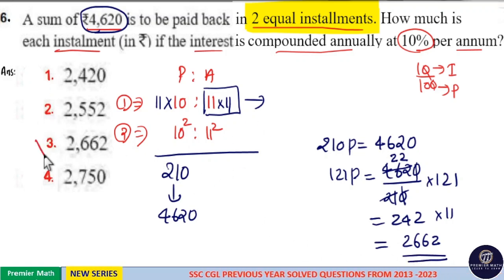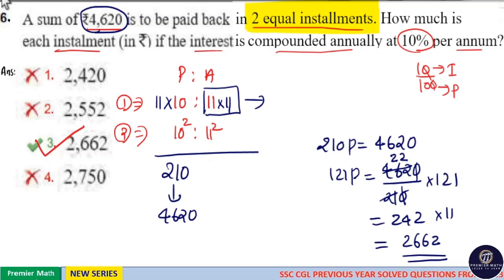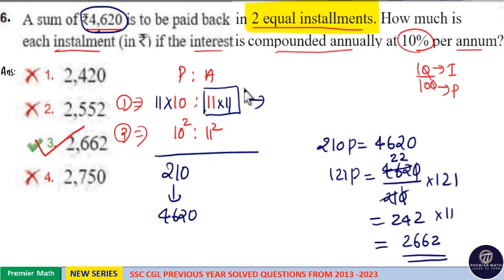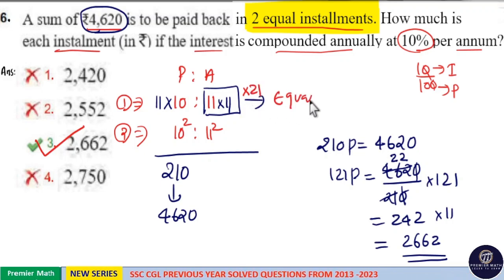Your answer is 2662. Option 3 is your answer. This is 11 squared means into 121. This is the equal installment.